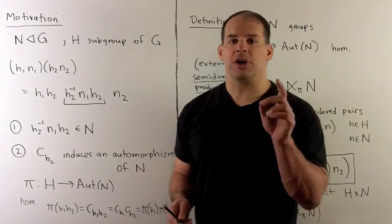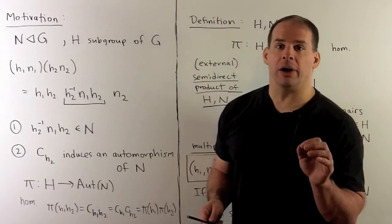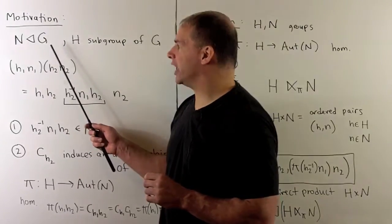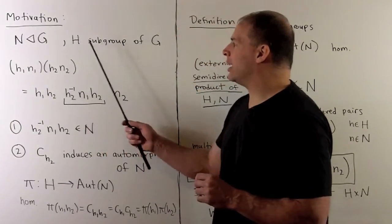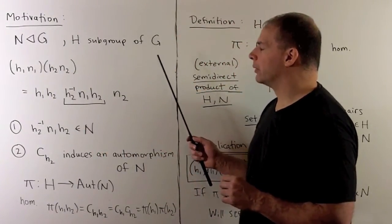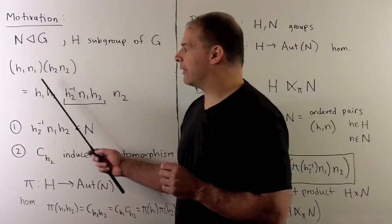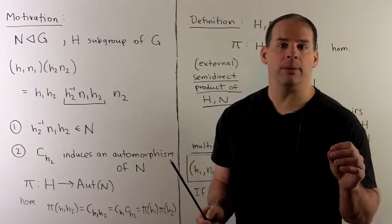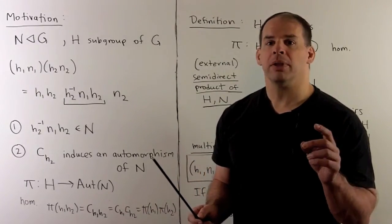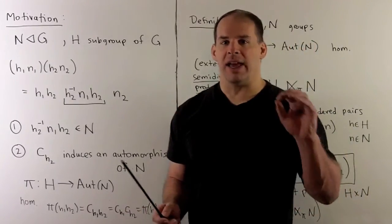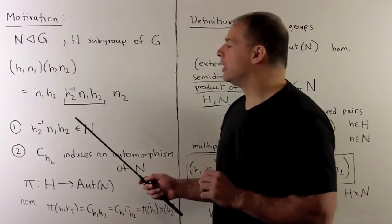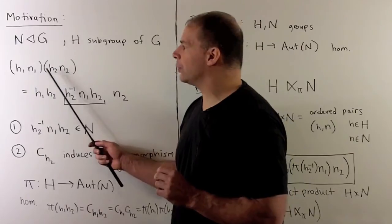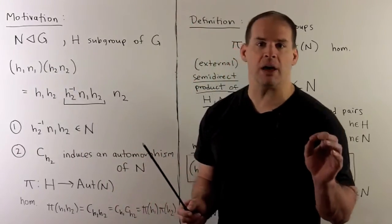Now, consider the following motivating scenario. We have a normal subgroup N in our group G, and H will be any other subgroup of G. Let's take the following product: H1 N1 times H2 N2, where the H's are in H and the N's are in N. The question is: how do we get the H's together and the N's together? If G is abelian, then I can just push H2 through N1 and the problem is solved.